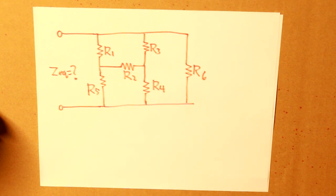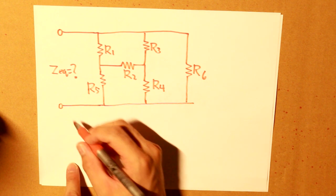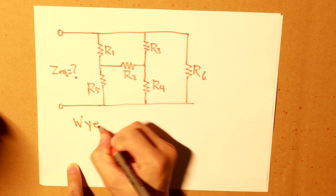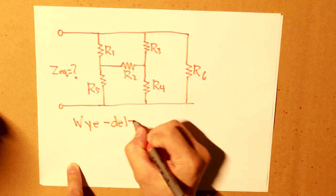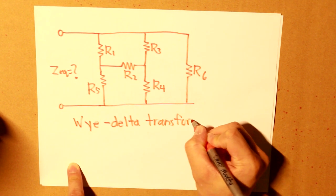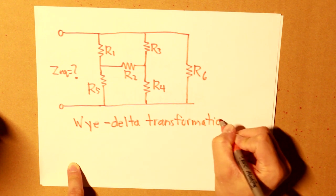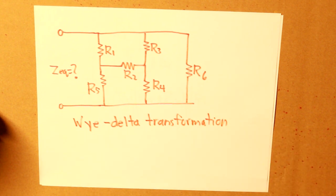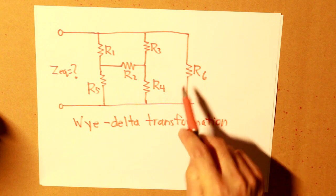Well, there is another solution to that, and that is the Wye-Delta transformation. Simply what that means is that we are going to have to find any sort of connection which resembles a Y or a Delta.